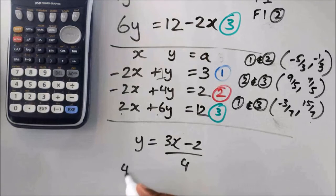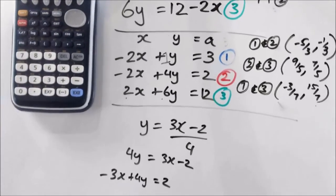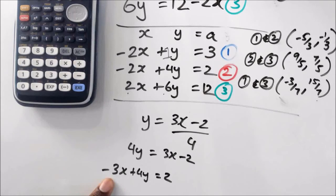So you've got to rearrange this, which will become 4y equals 3x minus 2, and then bring it around, negative 3x plus 4y equals 2. So then you can see that negative 3 is what the a value would be, 4 is what the b value would be, 2 is what the c value would be.